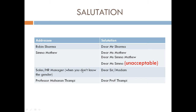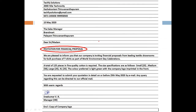If you are writing to Professor Mohanan Tampe, you can address him as 'Dear Professor Tampe.' The subject line — after leaving a line space, you can add the subject line. It helps the recipient know at a glance what the letter is about.